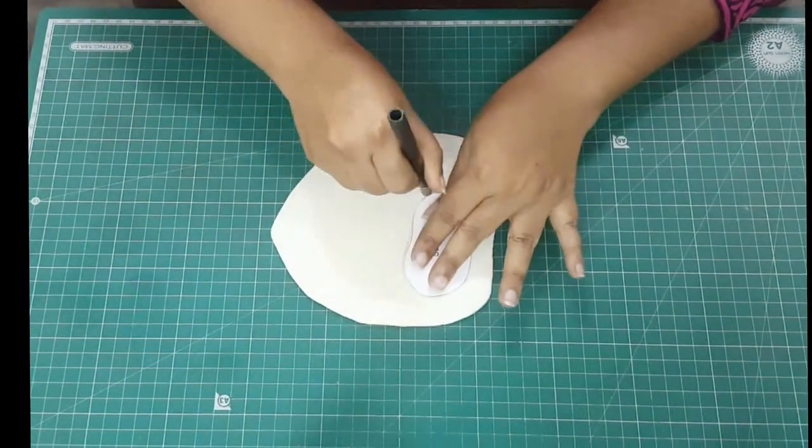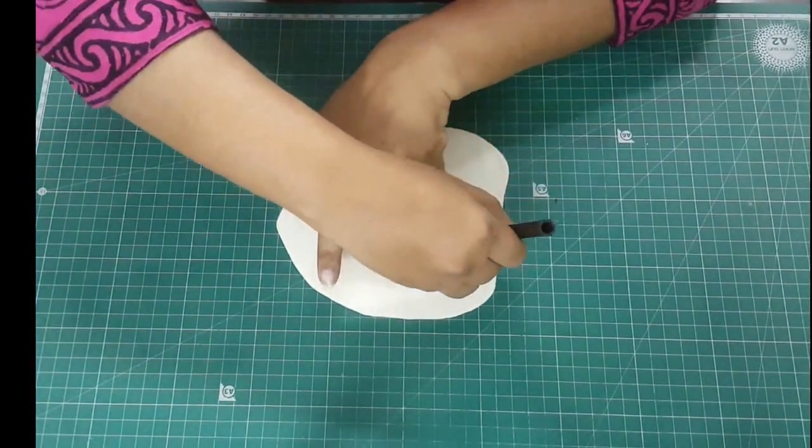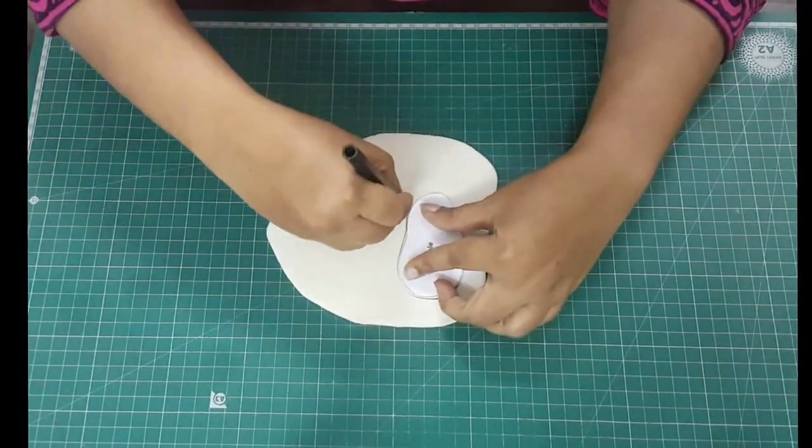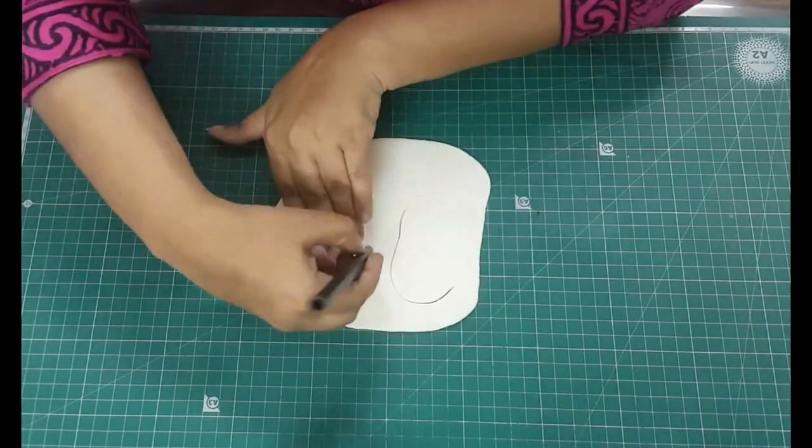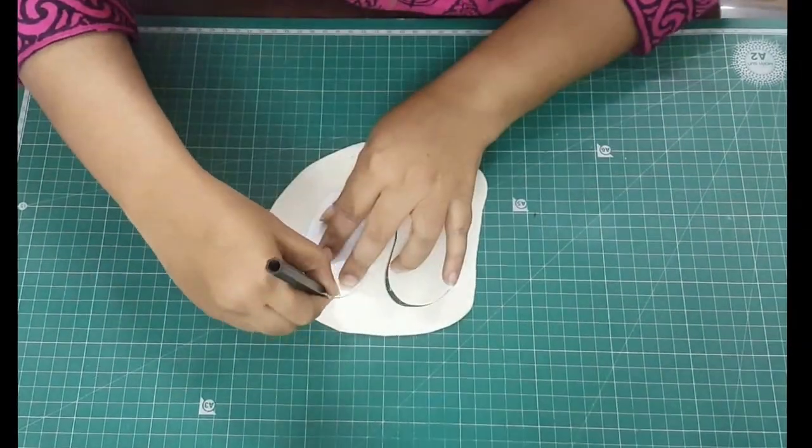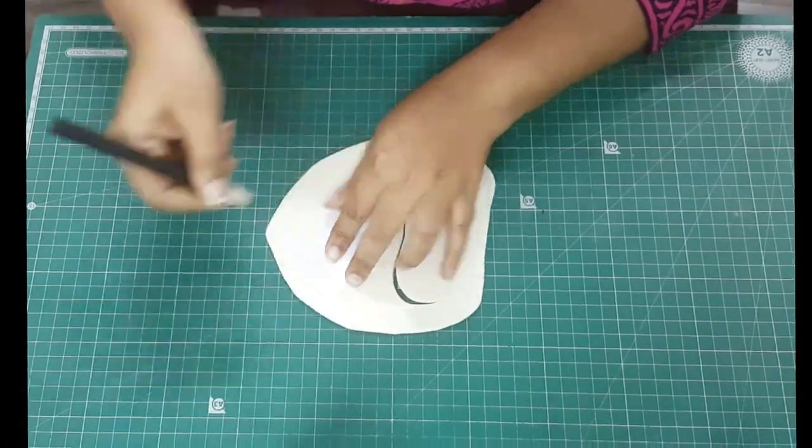Roll out a thick piece of gum paste and cut out the soles for both the shoes. Make sure to flip for the other side.